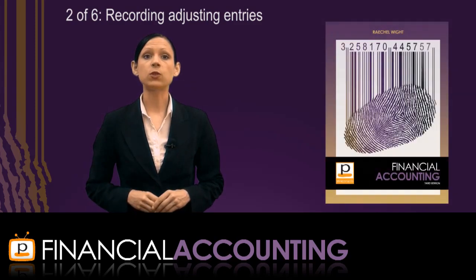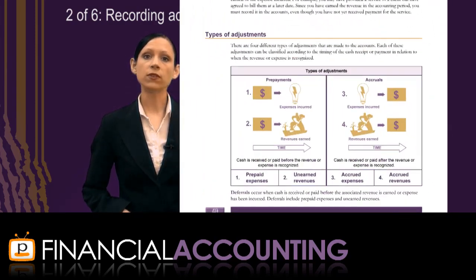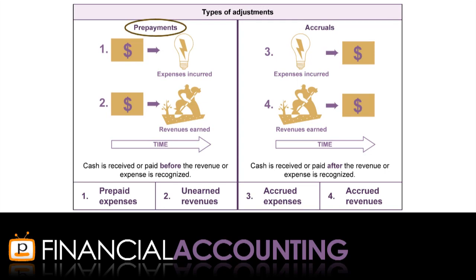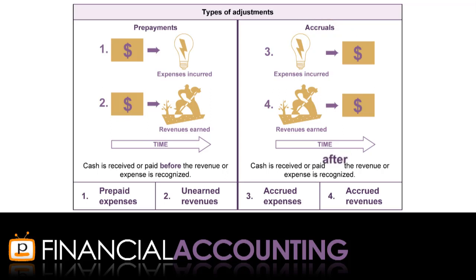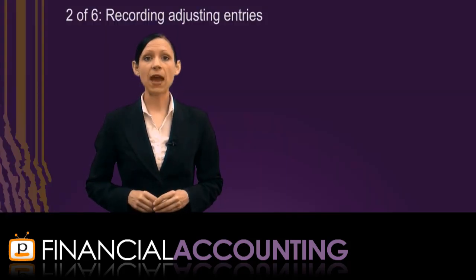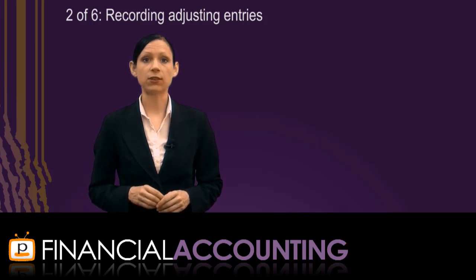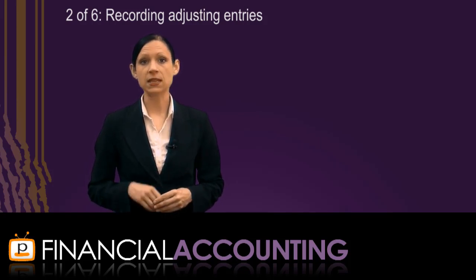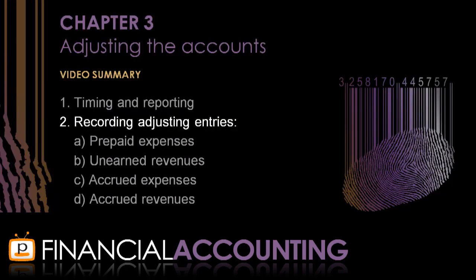There are four different types of adjusting entries. Two of the adjustments are classified as prepayments, where cash is received or paid in the accounting period before the revenue or expense is recognised. Prepayments include prepaid expenses or unearned revenues. The other two adjustments are accruals, which occur when cash is received or paid in the accounting period after the revenue or expense is recognised. Accrued expenses and accrued revenues are the two types of accruals. Both prepayments and accruals are recorded at the end of the accounting period, after the unadjusted trial balance has been prepared, but before preparing the financial statements.